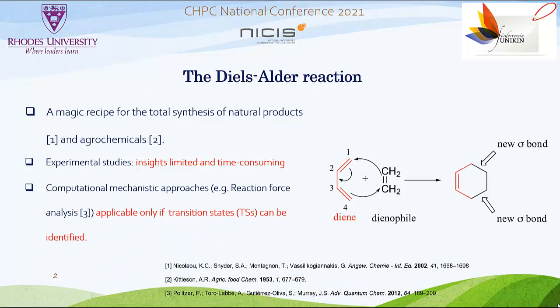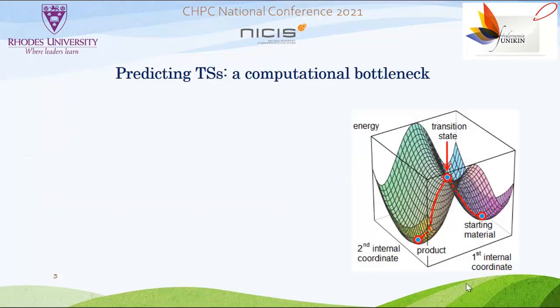On the other hand, computational mechanistic approaches, such as reaction force analysis, can only be applied if transition state geometries of the reactions to investigate are known. Unfortunately, locating transition state geometries is not guaranteed. Transition states are subtle points on the potential energy surface of chemical reactions, sitting at the top of the lowest energy path that connects the reactant to the product.